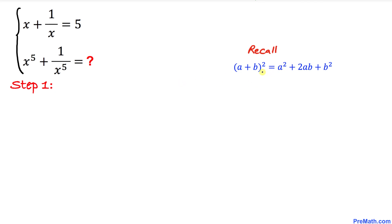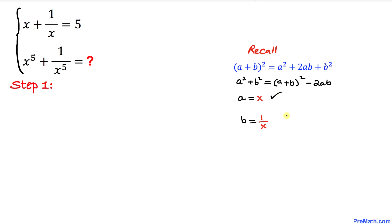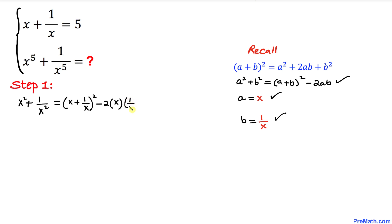Here's our very first step. Let's recall the well-known formula: a plus b squared equals a squared plus 2ab plus b squared. Moving 2ab to the left-hand side gives us a squared plus b squared equals a plus b whole square minus 2ab. Now if we let a equal to x and b equal to 1 over x, this equation becomes x squared plus 1 over x squared equals x plus 1 over x whole squared minus 2 times x times 1 over x.